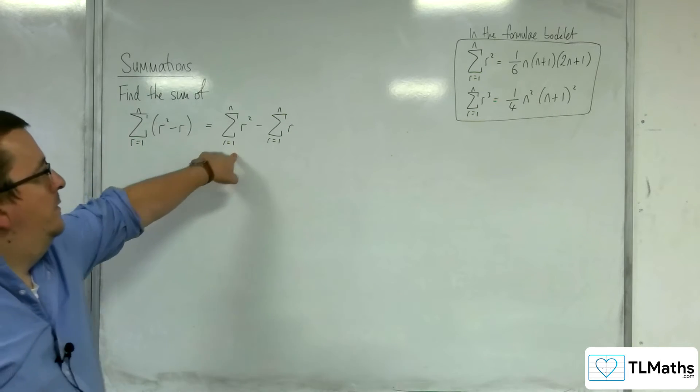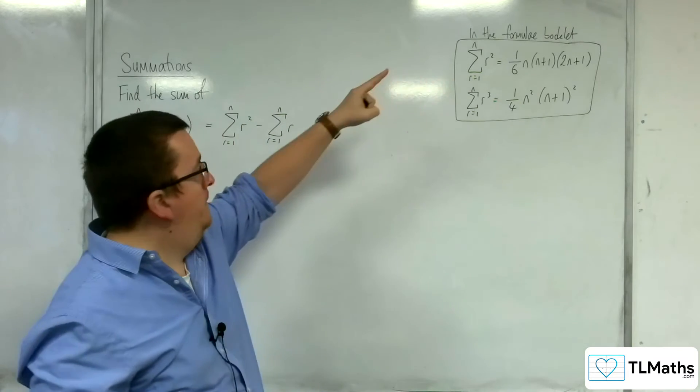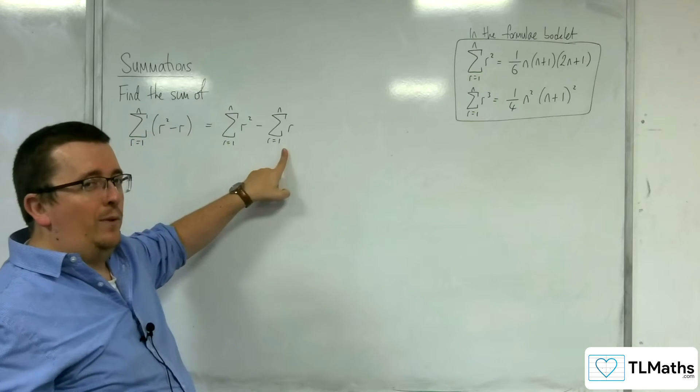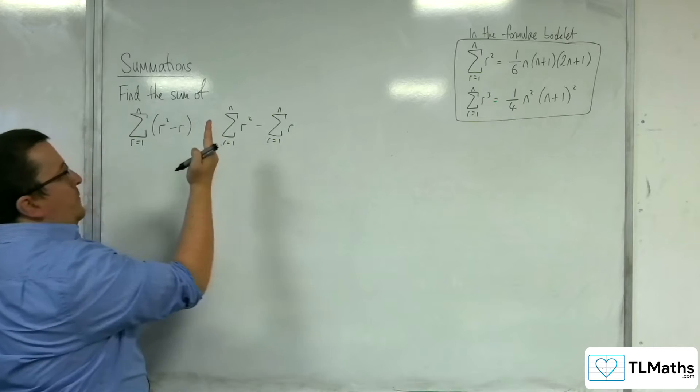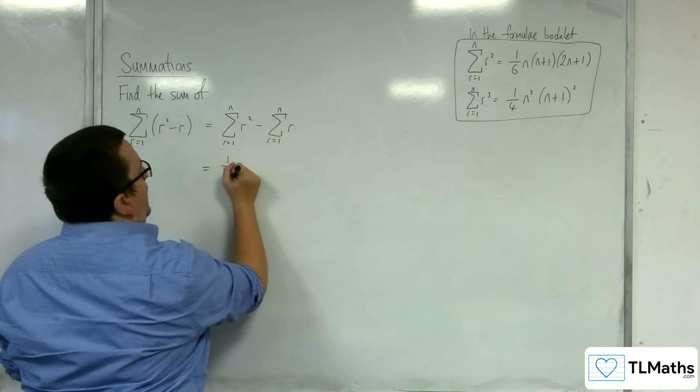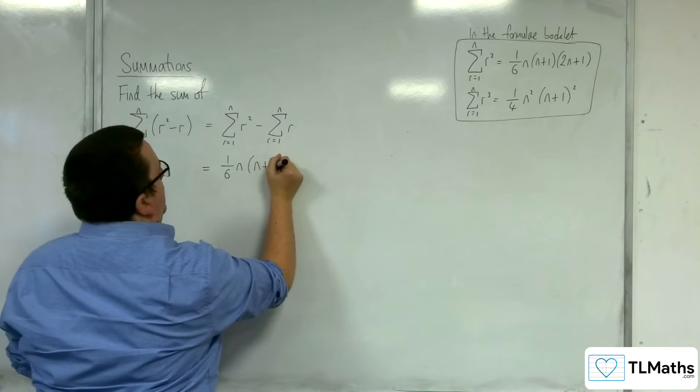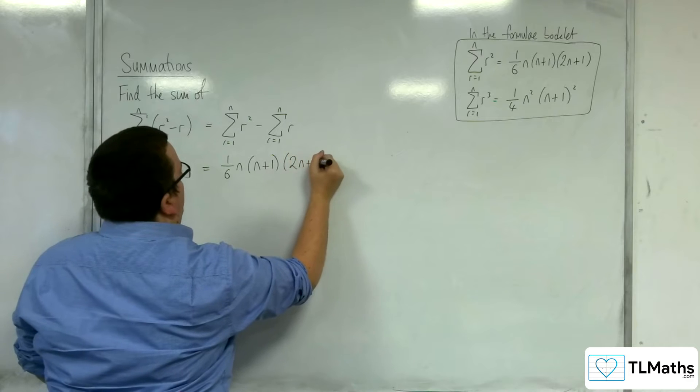Now, we've got that one because that's given to us in the formula booklet, but we don't have that one, so that's the one we've got to remember. Sum of r squared is 1 sixth n, n plus 1, times 2n plus 1.